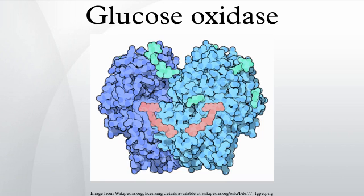The glucose oxidase enzyme, also known as notatin, is an oxidoreductase that catalyzes the oxidation of glucose to hydrogen peroxide and D-gluconolactone. This enzyme is produced by certain species of fungi and insects and displays antibacterial activity when oxygen and glucose are present.